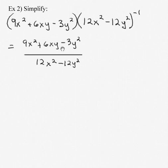9x squared plus 6xy minus 3y squared divided by 12x squared minus 12y squared. So using negative 1 as an exponent again means take the reciprocal of that, which would put this entire polynomial in the denominator, and we have our rational algebraic expression.